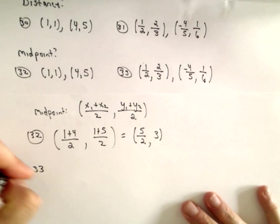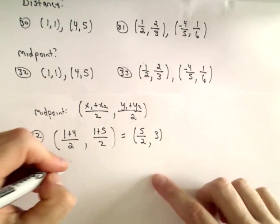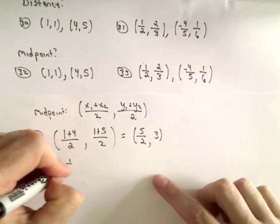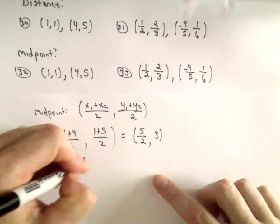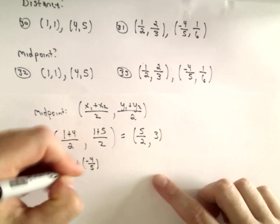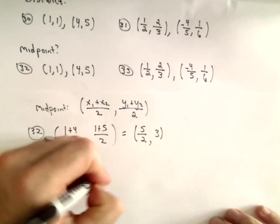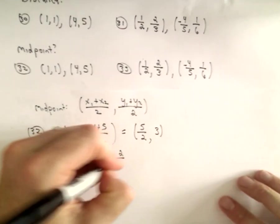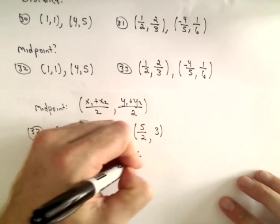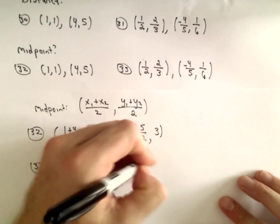Let's see. For number 33, again, we're just doing the same thing. We're adding the x-coordinates. So we have 1 half plus negative 4 fifths, all over 2, and then we have 2 thirds plus 1 sixth, all divided by 2.